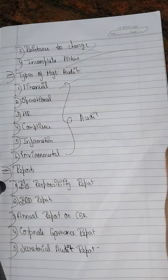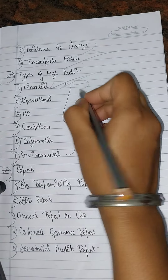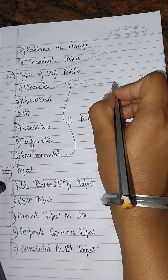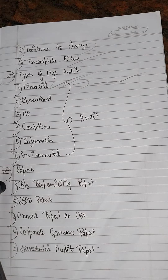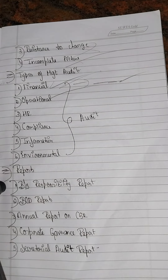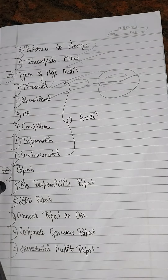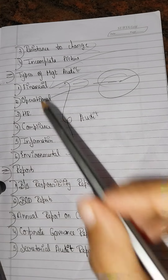The next topic is the types of management audit. There are many types. The first is a financial audit — at the end of the year, you obtain the balance sheet, financial statements, gross profit and net profit. Next is an operational audit, which checks the overall performance of the company, such as production and manufacturing processes.